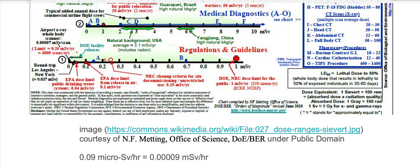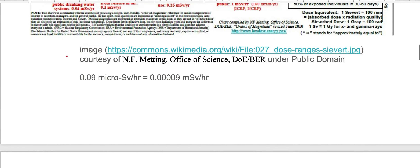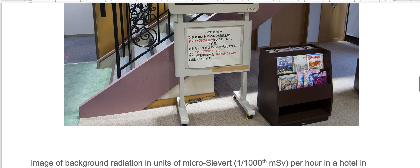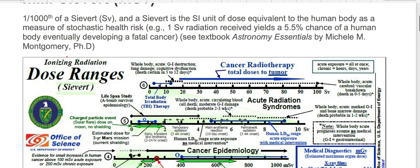The limit the EPA sets is 4,000 scans per year, so the longest duration you could spend in this hotel before reaching the EPA limit of 0.25 sieverts per year is about half of an Earth year. Then you must leave Japan in order to keep your dosage below the EPA limits.